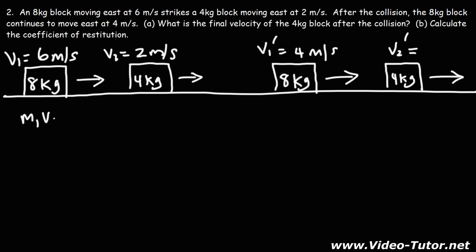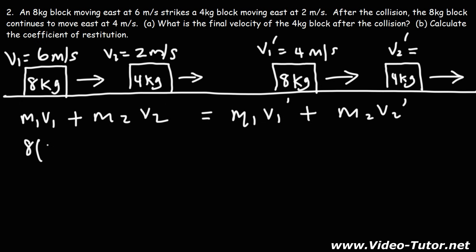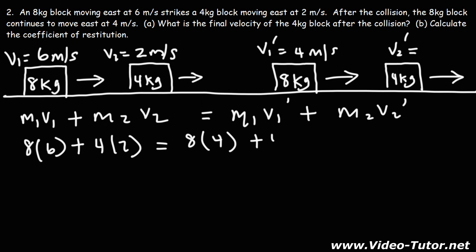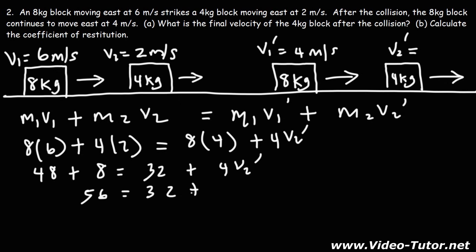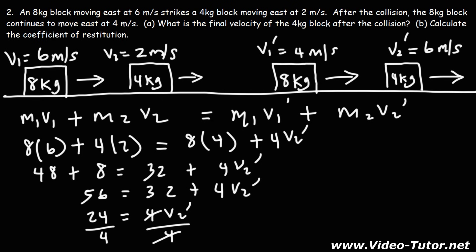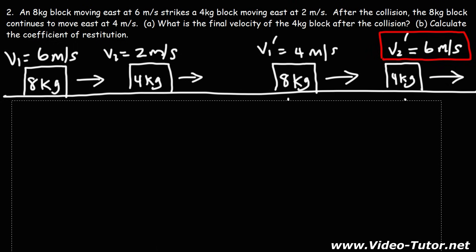Using conservation of momentum: M1V1 plus M2V2 equals M1V1 prime plus M2V2 prime. M1 is 8, V1 is 6, M2 is 4, V2 is 2, V1 prime is 4. So 8 times 6 is 48, 4 times 2 is 8, 8 times 4 is 32. That gives us 56 on the left side. 56 minus 32 is 24, and dividing both sides by 4 gives us 24 over 4, which is 6 meters per second. That's the final velocity of the 4-kilogram block after the collision.